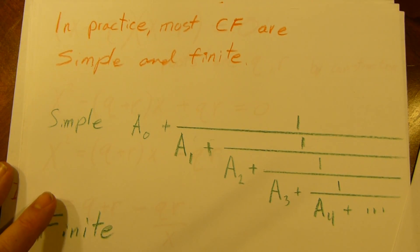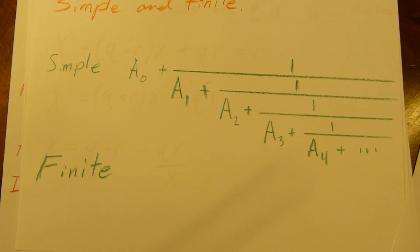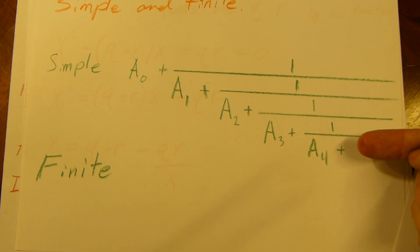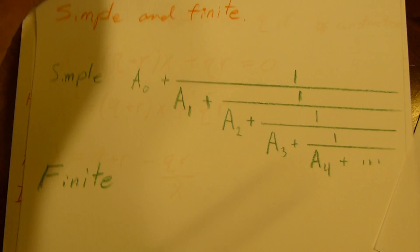Okay, so as I said, in practice most continued fractions are simple and finite. Simple just means that the numerator is 1. That's all it means. And the a's are all positive integers. So no negative funny business here. And in practice they're finite, which means that instead of going off forever, we cut it off and just say, okay, start calculating. Which is a surprisingly common philosophy in both math and physics, I find. Shut up and calculate.